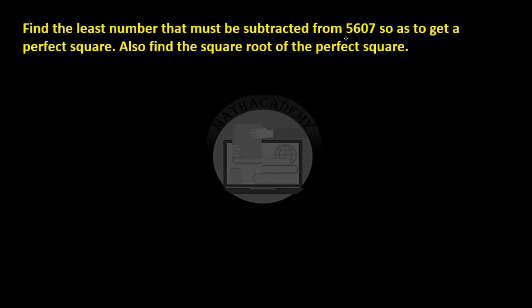So this is sure that 5607 is not a perfect square number. So let us first try to find out the square root of 5607 using the division method. The first step is to put the bars. So we start from the ones digit and put the bars on the pair of digits.